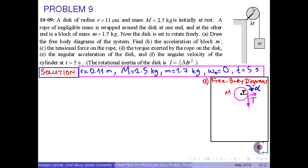Because there is a rotation, we draw the angular acceleration as shown. The free body diagram for small m is drawn as well, where A is the linear acceleration of mass m. That's all for the free body diagrams of the system.